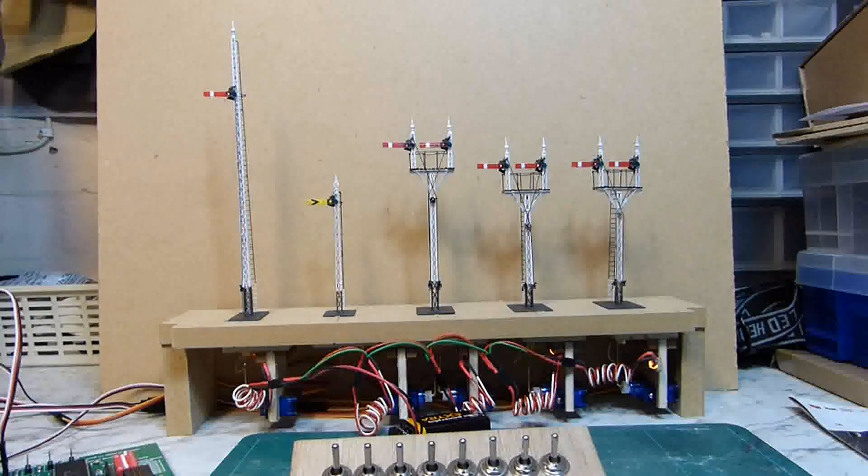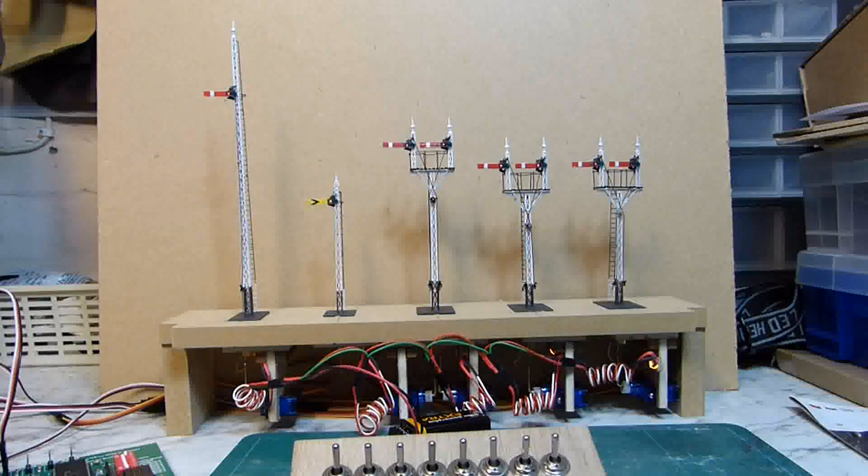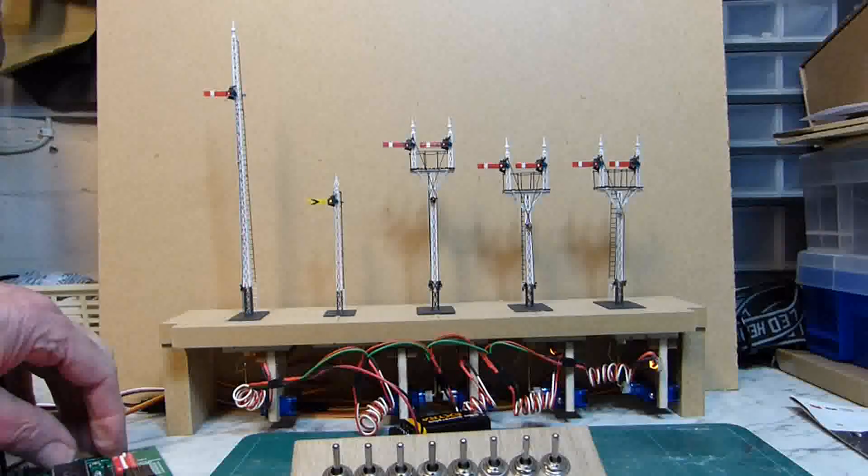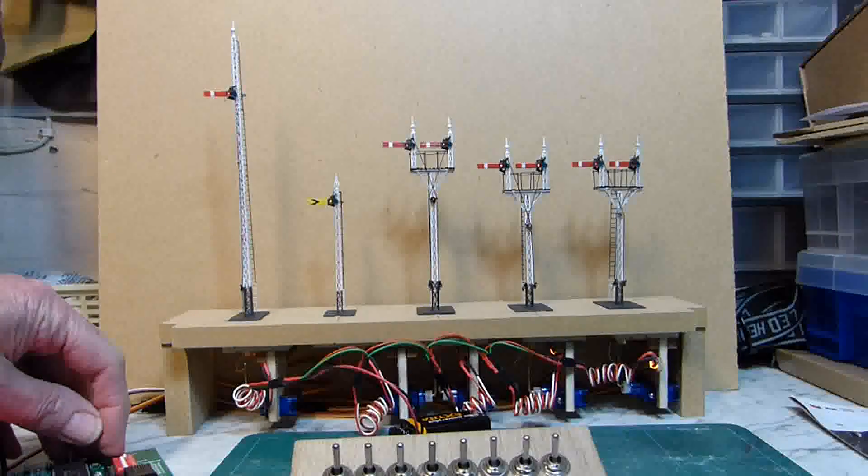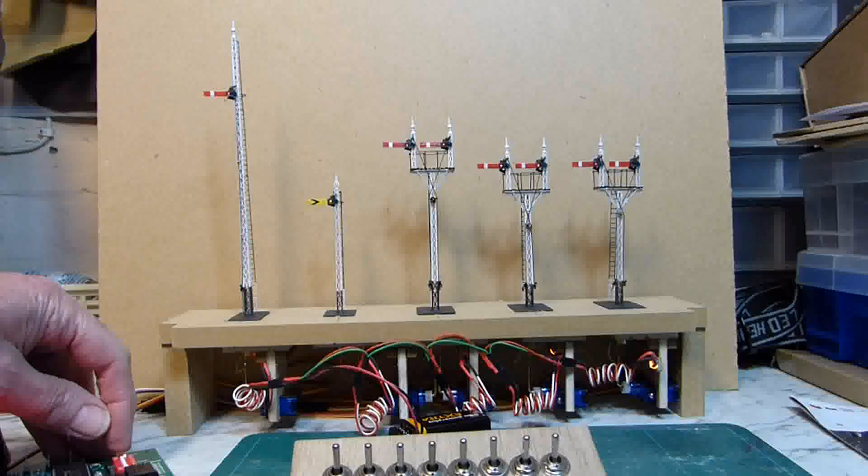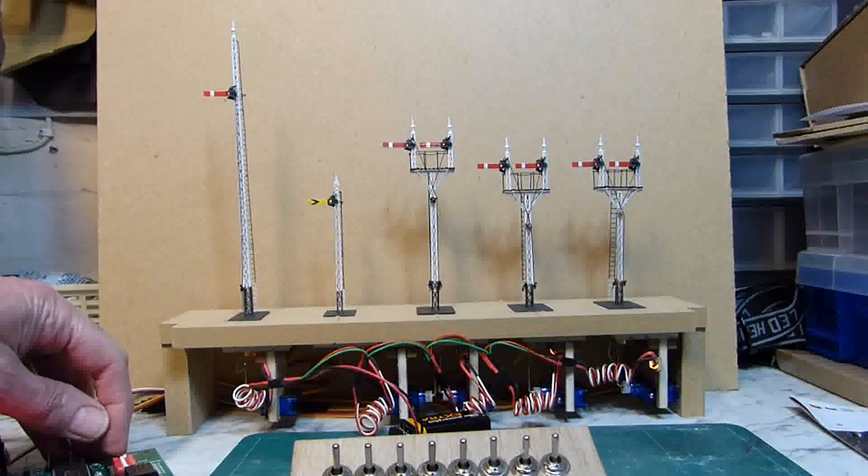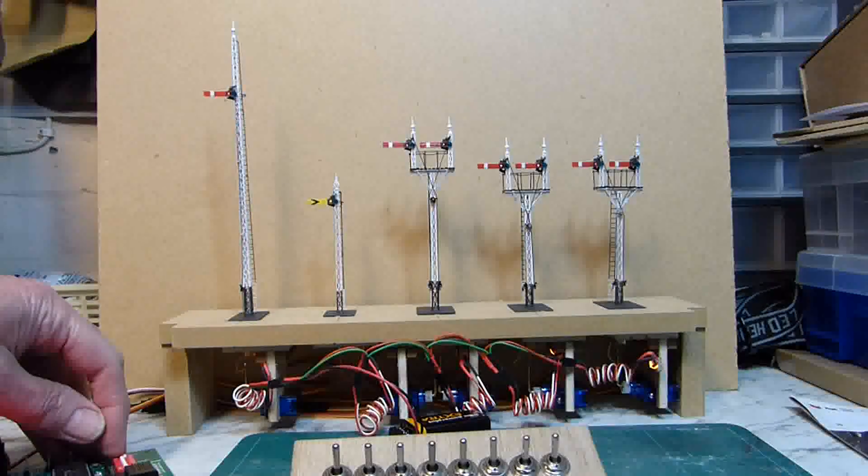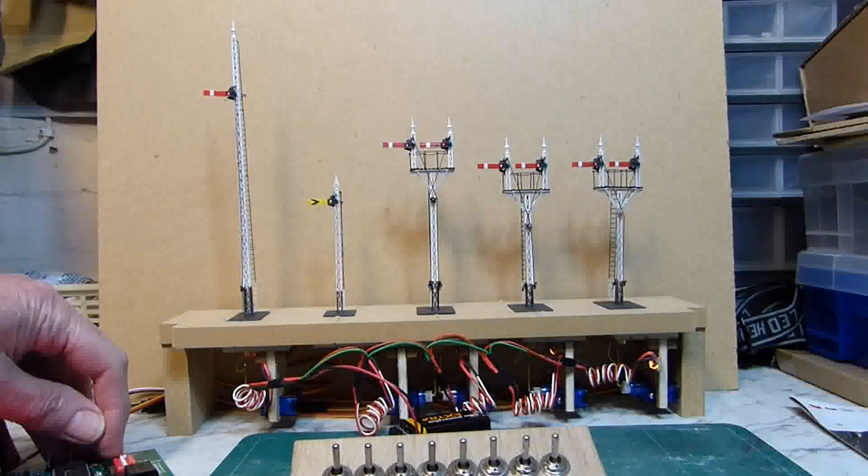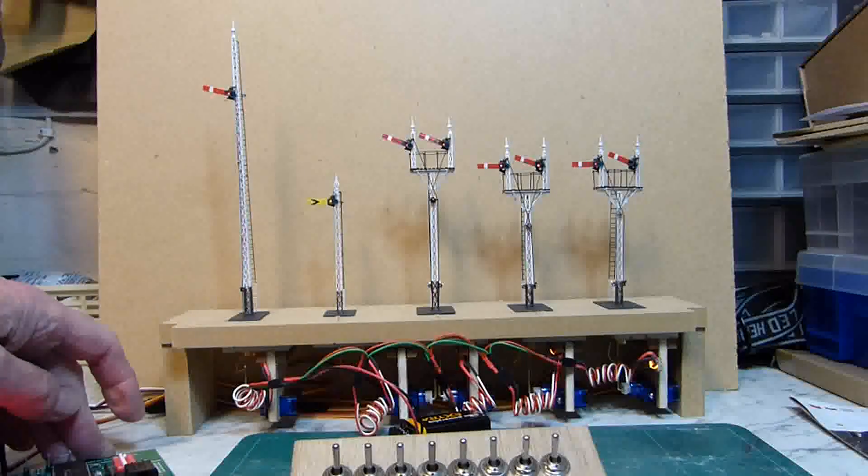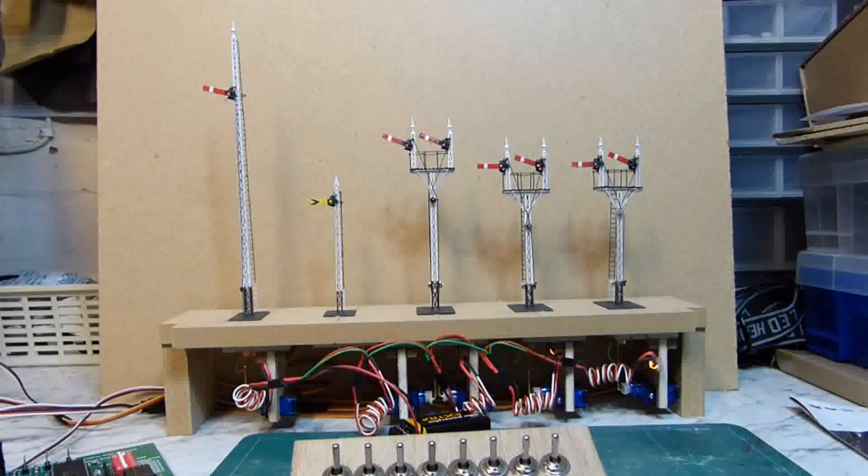Just to show the effect of setting the servo board into the safe mode, you can see what happens to the signals when I do that. All the settings for danger and clear will be lost and the signals will move to about halfway between danger and clear. There's the switch, just adjust that and they all move one after another. And that's it. All those are now in what's called the safe position.